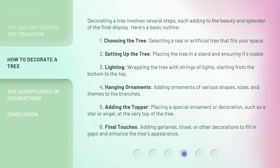Decorating a tree involves several steps, each adding to the beauty and splendor of the final display. Here's a basic outline: 1. Choosing the tree — selecting a real or artificial tree that fits your space. 2. Setting up the tree — placing the tree in a stand and ensuring it's stable. 3. Lighting — wrapping the tree with strings of lights, starting from the bottom to the top. 4. Hanging ornaments — adding ornaments of various shapes, sizes, and themes to the branches. 5. Adding the topper — placing a special ornament or decoration, such as a star or angel, at the very top of the tree. 6. Final touches — adding garlands, tinsel, or other decorations to fill in gaps and enhance the tree's appearance.